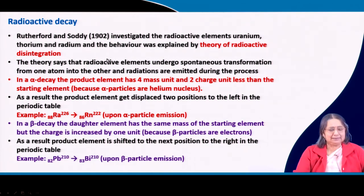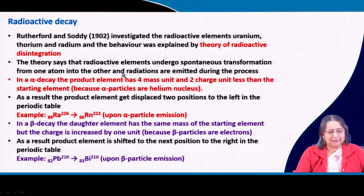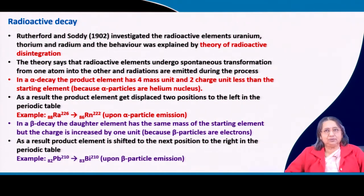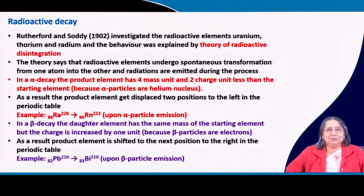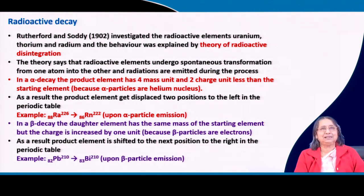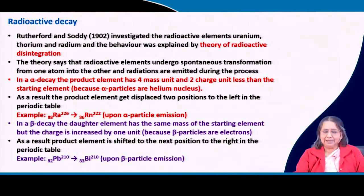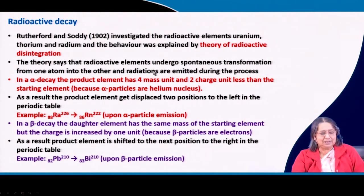What is this theory? What does it say? The theory says that radioactive elements undergo spontaneous transformation — one atom is transformed into another atom — and radiations are emitted during the process. This was a new concept at the time, because previously it was thought that an atom cannot be changed into another atom. But when radioactivity was discovered, it was realized for the first time that one atom can go to another atom, and that this transformation occurs spontaneously.